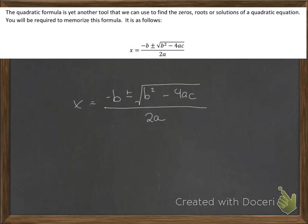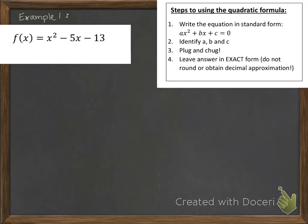So let's do a few examples. Example 1. We have our function f equals x squared minus 5x minus 13. So we want to find the roots, zeros, or solutions of this equation. So first we set it equal to 0. So that is our first step. We write the equation in standard form and we set it equal to 0. And you can see that we've done that right there.